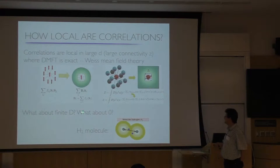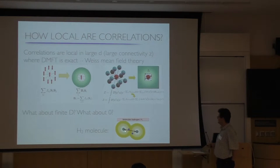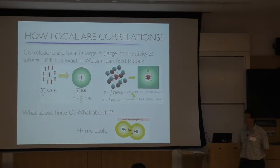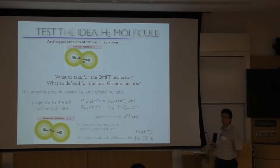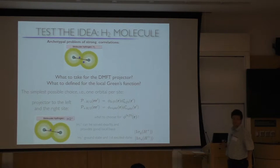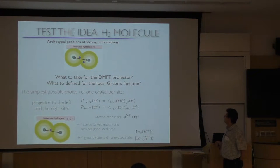The question is how good is this approximation in finite dimensions. In 0D, the H2 molecule is a standard problem of strong correlations. To solve the H2 molecule in DMFT, one has to first define the DMFT projector, because if we choose a bad projector we are not going to get good results. We need to choose a good projector and define what the local Green's function is.